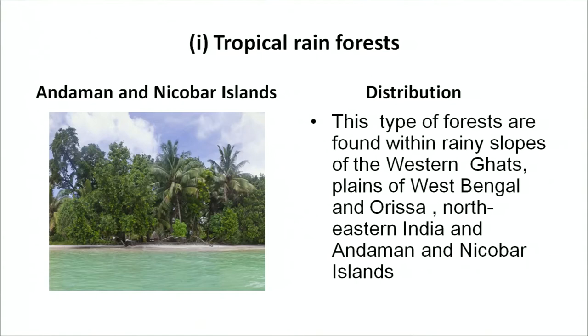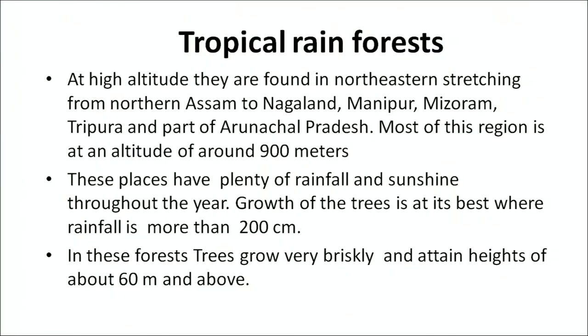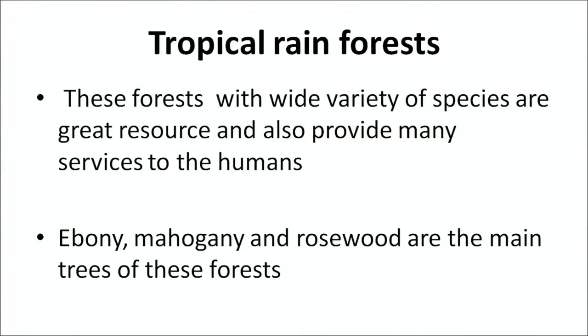The tropical rainforests are found within the rainy slopes of the Western Ghats, plains of West Bengal, Orissa, northeastern India and the Andaman and Nicobar Islands. At high altitude they are found in the northeastern stretches from northern Assam to Nagaland, Manipur, Mizoram, Tripura and parts of Arunachal Pradesh. Most of this region is at an altitude of about 900 meters. These places have plenty of rainfall and sunshine throughout the year. The growth of trees is at its best when rainfall is nearly 200 centimeters. In these forests the trees grow very briskly and attain a height of 60 meters and above. These forests have a wide variety of species and are a great resource, also providing many services to mankind.